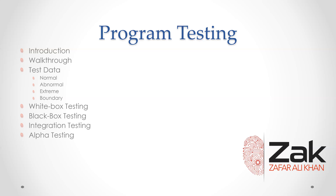First, alpha testing is used — the completed or nearly completed program is tested in-house by the development team using predefined test data. Then beta testing is used — the completed program is tested by a small group of intended users before it is generally released, without predefined test data. Finally, acceptance testing is used to prove to the customer that the completed program works as required in the environment in which it will be used.